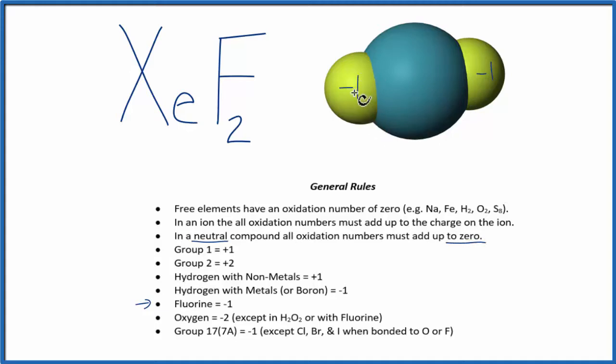So we could say minus 1, minus 1, that's minus 2, plus the oxidation number for xenon. That's going to equal our 0 here. So it's going to have to be plus 2.